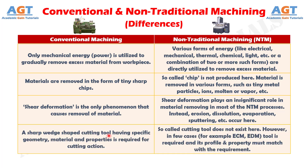Difference No. 4: In conventional machining, a sharp wedge-shaped cutting tool having specific geometry, material, and properties is required for cutting action, whereas in non-traditional machining, so-called cutting tool does not exist. However, in few cases such as electrochemical machining and electrical discharge machining, a tool is required and its profile and property must match with the requirement.